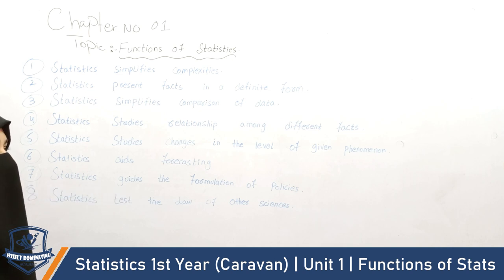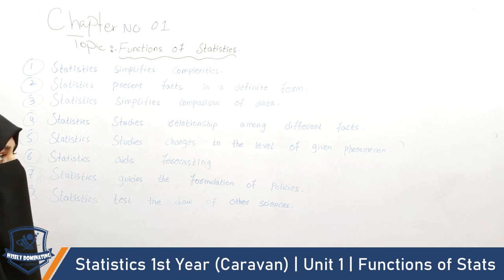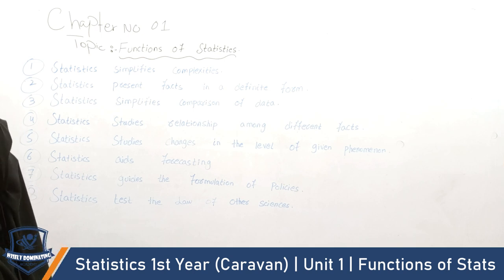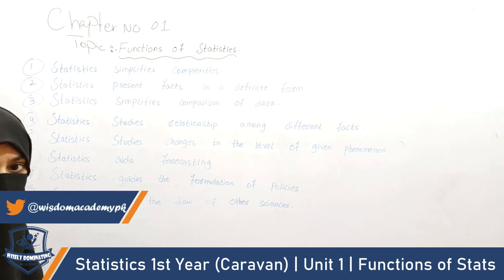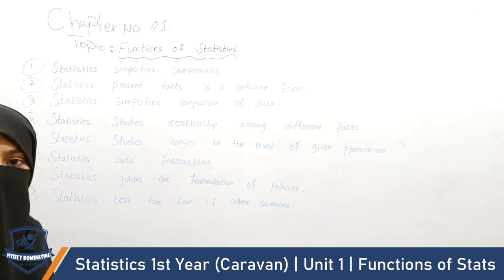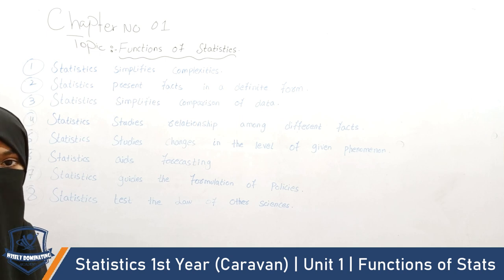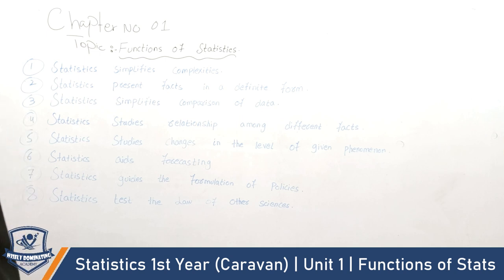Statistics presents facts in a definite, numerical form. When information is presented numerically, understanding becomes easier. This is what we have seen in the air crash example.